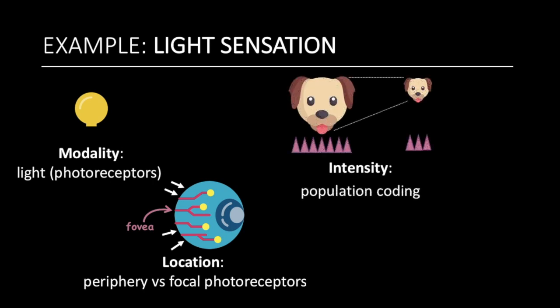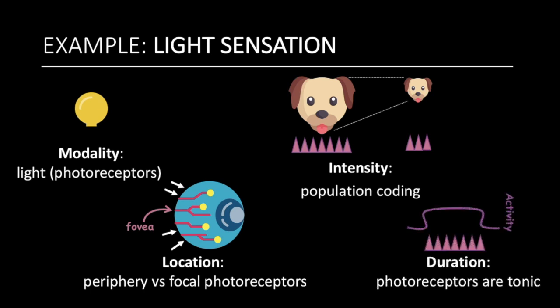Population coding represents the intensity of the stimulus. For instance, far away doggos will activate fewer receptors and details will not be clear. However, the closer they get, the more receptors will be activated and we can appreciate their intricate details. Finally, duration is represented in how photoreceptors are tonic, producing a constant signal while light stimulus is applied.